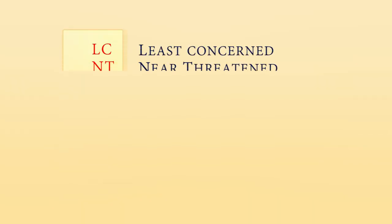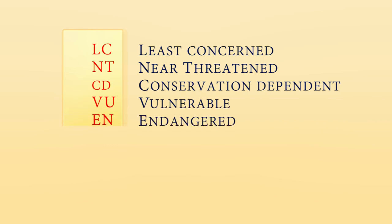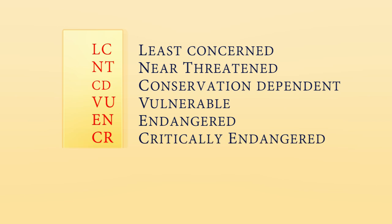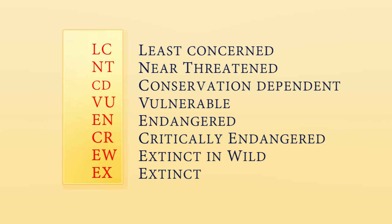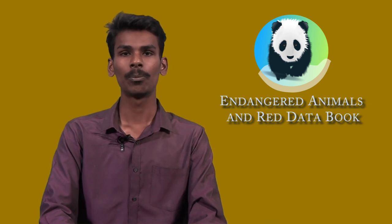There are seven different categories in the IUCN Red Data List depending on the availability of animals in a particular area. They are: LC — Least Concern, NT — Near Threatened, CD — Conservation Dependent, VU — Vulnerable, EN — Endangered, CR — Critically Endangered, EW — Extinct in the Wild, and finally EX — Extinct. Other categories are DD — Data Deficient, and NE — Not Evaluated.